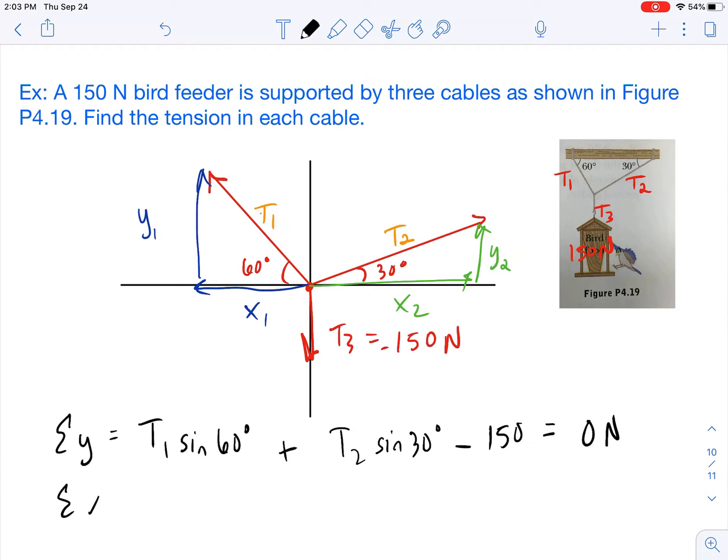Now, we're going to do the same thing for the X component. So I've got pretty much X1 and X2 are going to have to cancel out. And so how do we solve for X1? Well, X1, if you notice, is going to the left. So that's a negative component. All right, so if I have T1 and X1, I'm going to use cosine because cosine is adjacent and hypotenuse. So negative T1 times the cosine of 60 plus, and the same thing on this side, with a 30, X2 and T2, we're going to do T2 times the cosine of 30. And that should also equal 0.